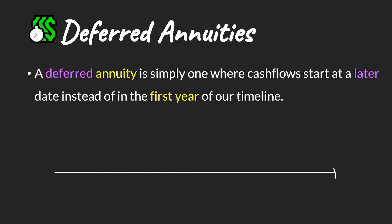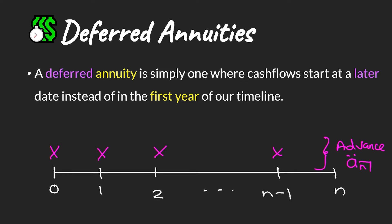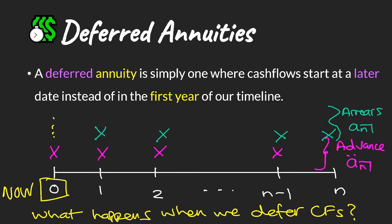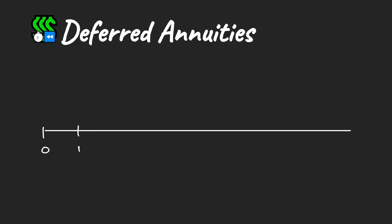We now turn to deferred annuities. A deferred annuity is simply one where cash flows start at a later date. Normally, for cash flows paid in advance the first cash flow is at time zero, and for cash flows paid in arrears the first cash flow is at time one. For a deferred annuity, cash flows instead start at some later date, and we introduce new notation for this.